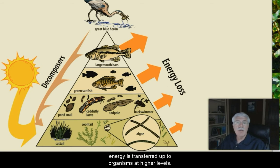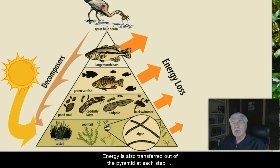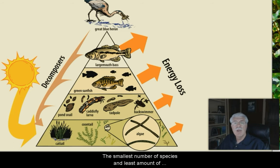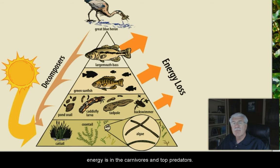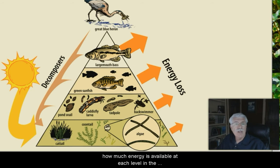As we move up the pyramid, energy is transferred up to organisms at higher levels. Energy is also transferred out of the pyramid at each step, and fewer species and individuals can be supported. The smallest number of species and least amount of energy is in the carnivores and top predators. The pyramid not only shows us what eats what, but how much energy is available at each level in the environment.